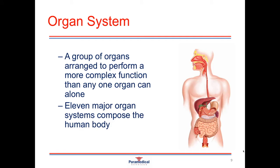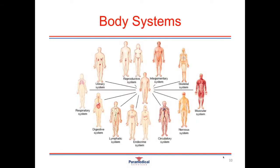We have 11 major organ systems that compose the human body, and we'll take the time today to look at most of these in quite a lot of detail. We've already discussed the digestive system. Starting with the respiratory system — it consists of the windpipe, the bronchioles, and the lungs. This system is what allows the entry of oxygen into the body and the expelling of carbon dioxide.